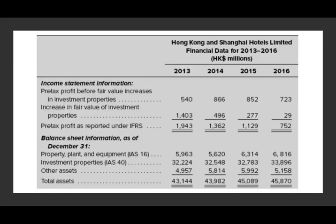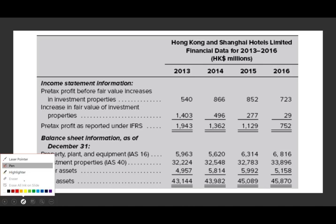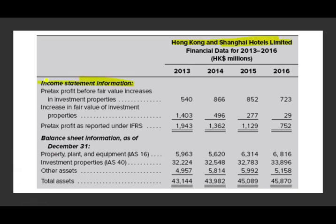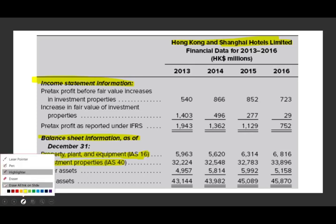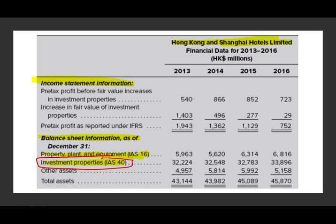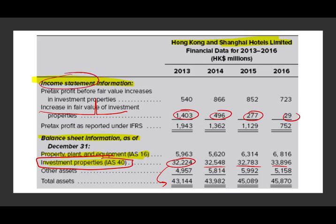Let's look at an actual example. We'll look at Hong Kong and Shanghai Hotel Limited — their income statement and balance sheet. On the balance sheet, notice they have property, plant and equipment following IAS 16, and investment property following IAS 40. Notice that 32 out of 43 billion of their assets is tied up in investment property — understandable because they're buying different hotels and those are rental properties. Investment property changes from year to year because it's reported at fair value, and the increase in fair value is reported on the income statement, not in OCI on the balance sheet.